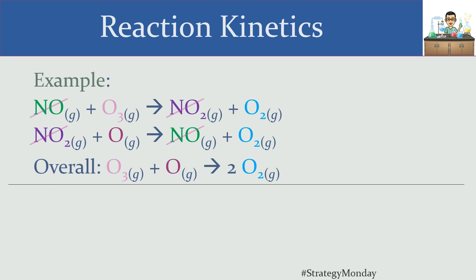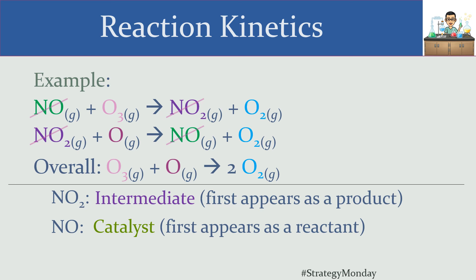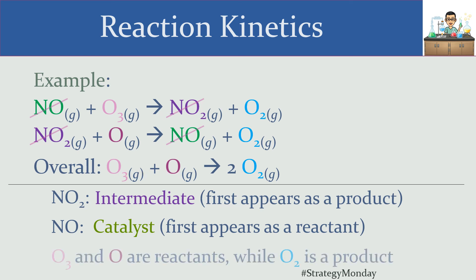Since neither NO nor NO₂ appear in the overall reaction, they play one of the roles we discussed. NO₂ first appears on the product side, then gets consumed on the reactant side — so it first appears as a product and is consumed as a reactant, making it an intermediate. Nitric oxide (NO) goes in as a reactant and gets regenerated as a product — characteristic of a catalyst. O₃ and O are the reactants, and O₂ is the product of this reaction.